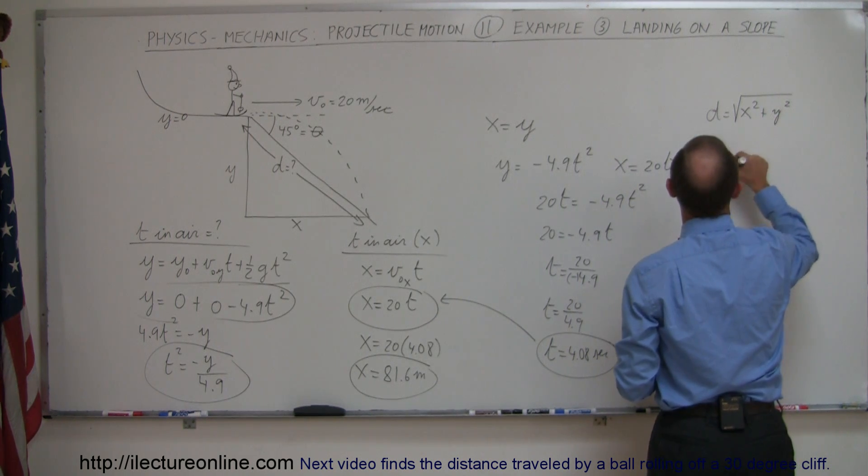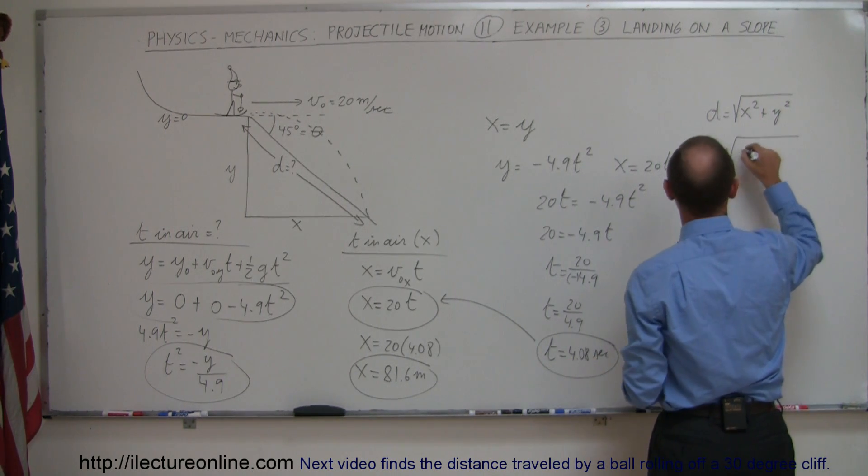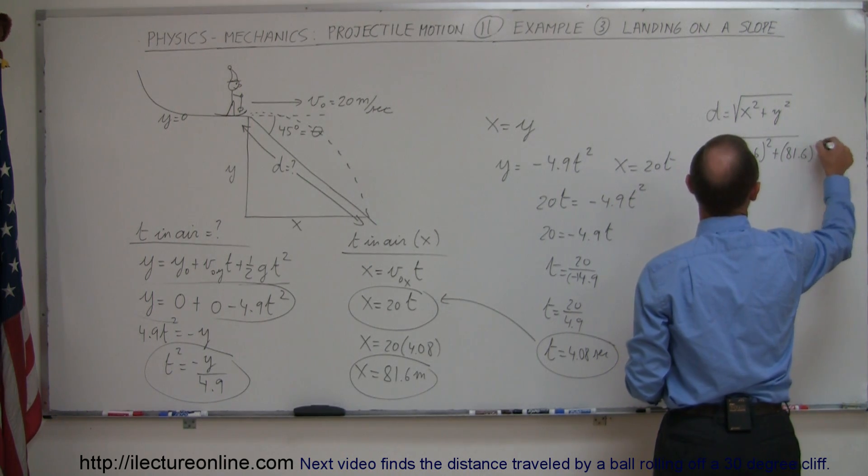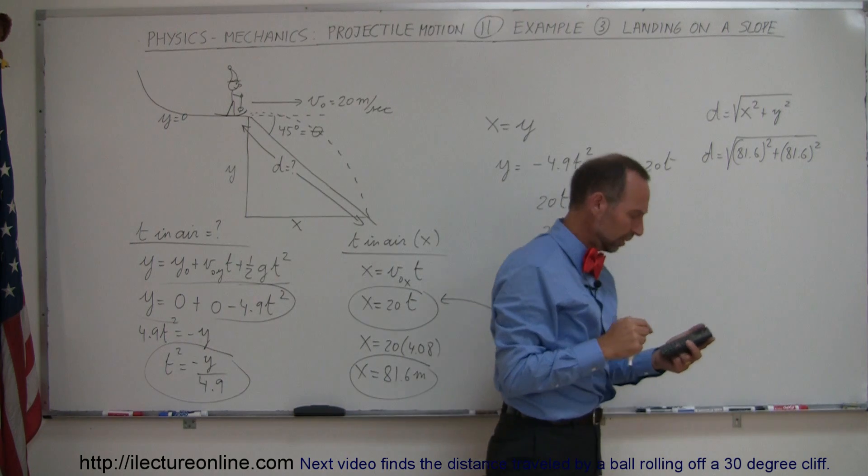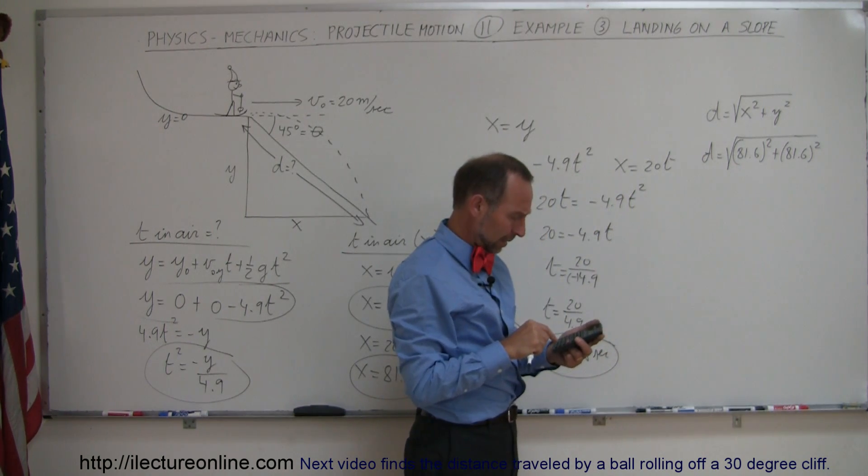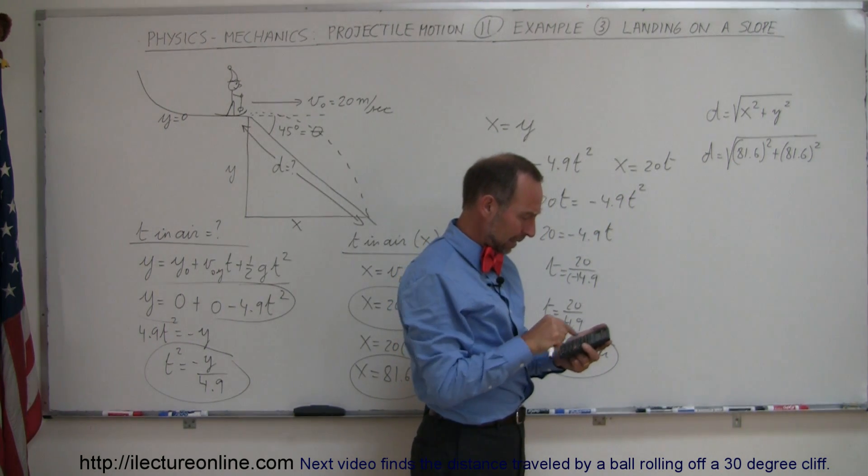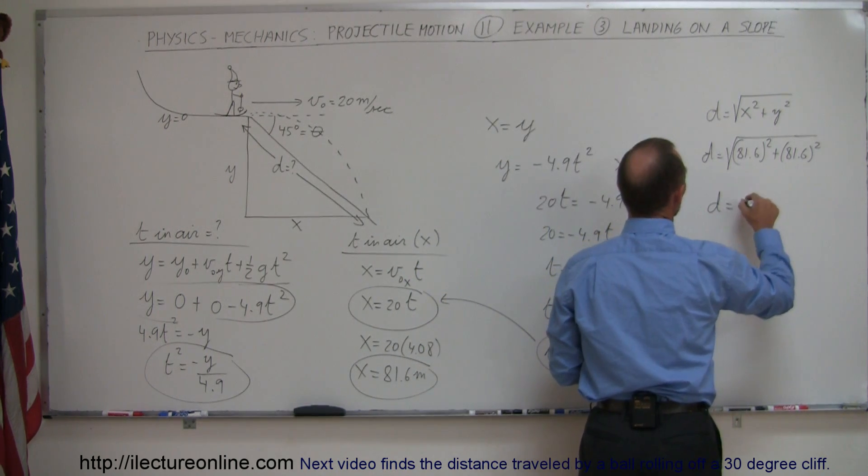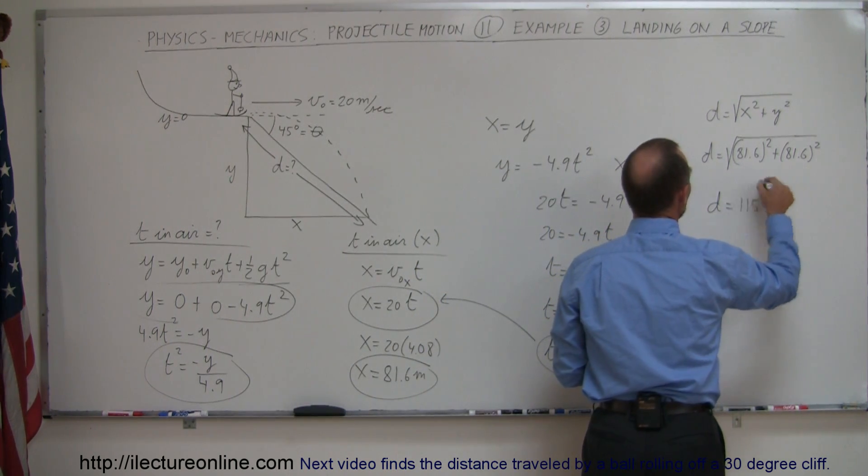so d is equal to the square root of 81.6 squared plus 81.6 squared, because x and y are equal to each other, so let's square that, double that, take the square root, and finally we can say that d is equal to 115 meters,